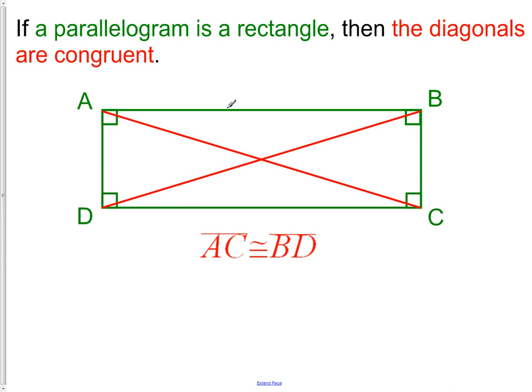And we also know from the fact that it's a parallelogram, that not only are AC and BD congruent, the shorter segments, let's put an E in the middle here, so AE, BE, CE, and DE are all also congruent.